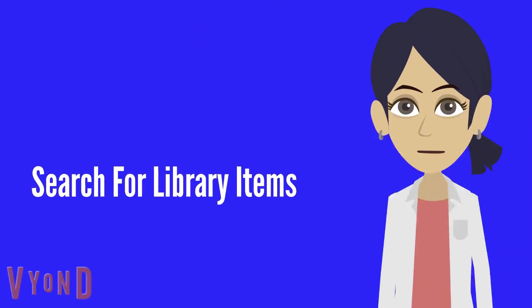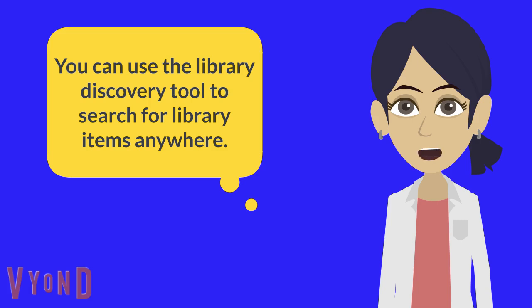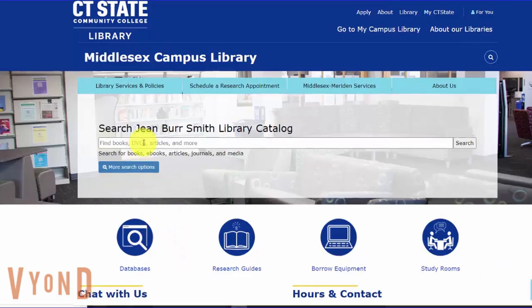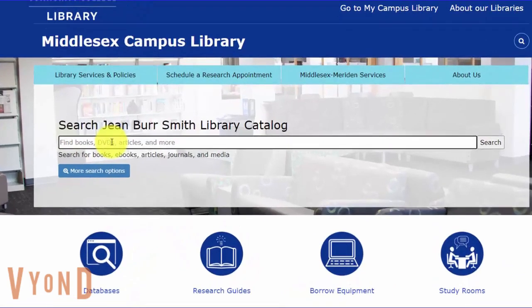Hello. In this session, we will talk about how to search for Middlesex library items online. You can use the library discovery tool to search for library items anywhere. On the library's home page, type your search terms and click search.